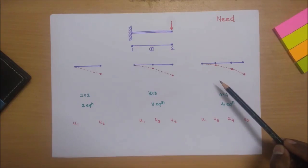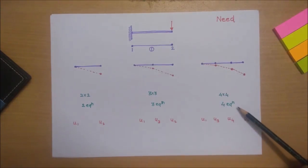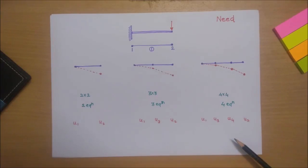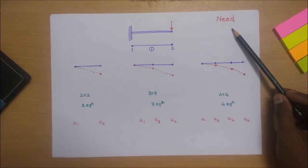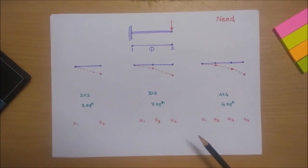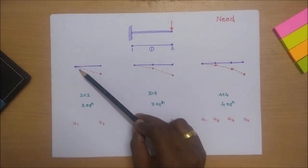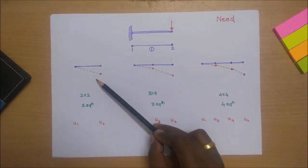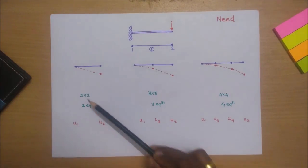However, solving four equations requires more computation time compared to two equations. This is why there is a need for shape functions. Shape functions allow us to define the problem efficiently and find any intermediate value at any point using those shape functions.